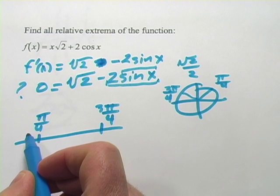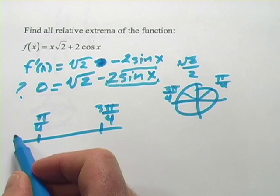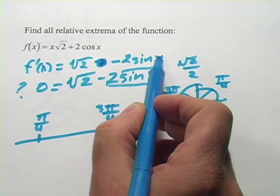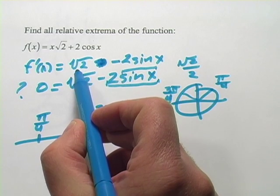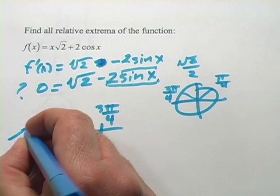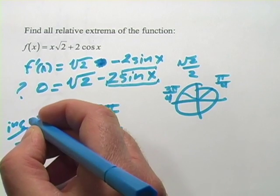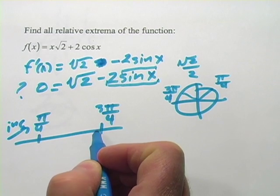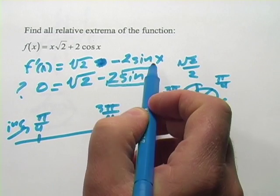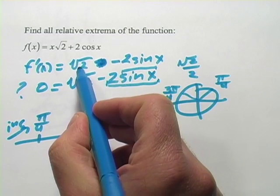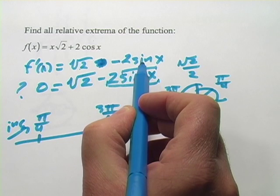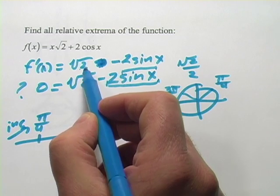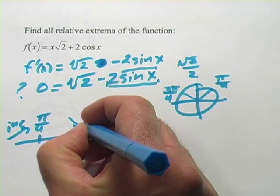Well, one point to the left here would be 0. And if we put that into our derivative, the sine of 0 is 0, we would just have the square root of 2 minus 0. That's a positive number. So this is increasing here. And something between pi over 4 and 3 pi over 4 is pi over 2. And the sine of pi over 2 is 1. And this would be the square root of 2 minus 2 times 1. So square root of 2 minus 2. Square root of 2 is less than 2. So this is going to be negative. So this would be decreasing.